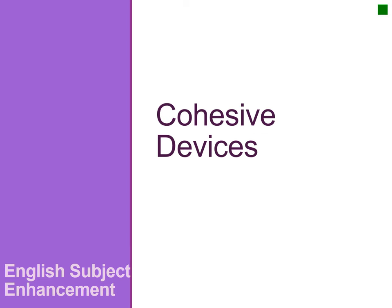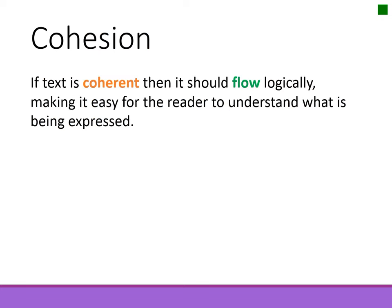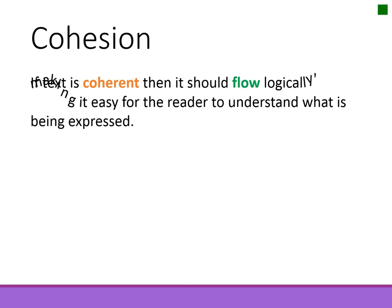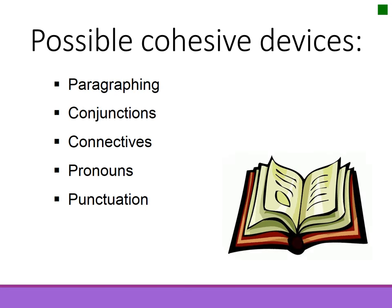Welcome to the English subject enhancement video on cohesive devices. This video will focus on what we mean by cohesion and the different ways to ensure that writing is coherent. If text is coherent then it should flow logically, making it easy for the reader to understand what is being expressed. There are a number of different ways to gain cohesion within sentences, paragraphs and at a whole text level. These are known as cohesive devices.